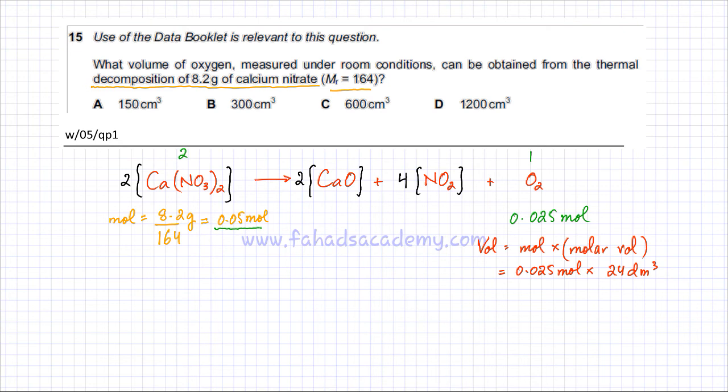0.025 multiplied by 24 gives 0.6 dm³. In cm³, I would multiply this by 1000, so it would equal 600 cm³. Option C is the correct option in this case. The volume of oxygen that is produced is going to be 600 cm³.